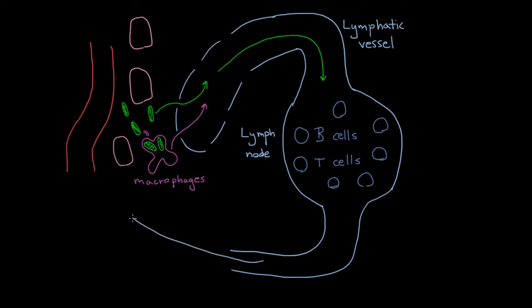So ultimately the fluid is going to end up back in the blood. And so actually another nice side effect of having these lymph nodes here interspersed throughout the lymphatic vessels is that they'll actually filter all this fluid that's going to get put back into the blood.